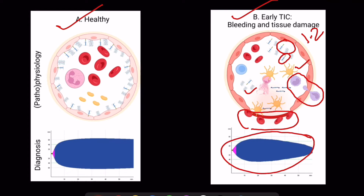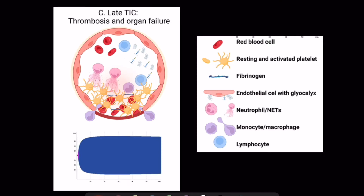After hemostasis, trauma-induced coagulopathy may shift towards a more hypercoagulable profile. The timing of this shift can vary from minutes to hours after injury and is patient- and injury-specific. Inflammation, endothelial and platelet dysfunction may result in thrombosis and organ dysfunction during this phase.